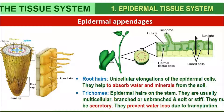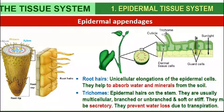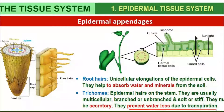When we see the epidermal appendages in the stem, they are known as trichomes (T-R-I-C-H-O-M-E). Trichomes are the epidermal hairs found on the stem. The function of trichomes is to prevent water loss due to transpiration.